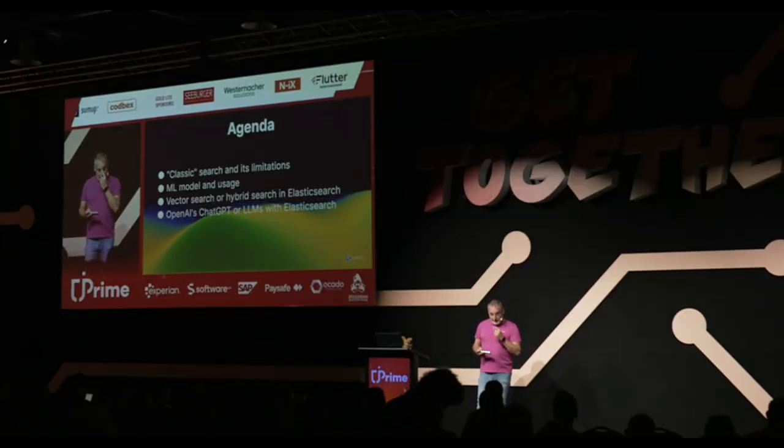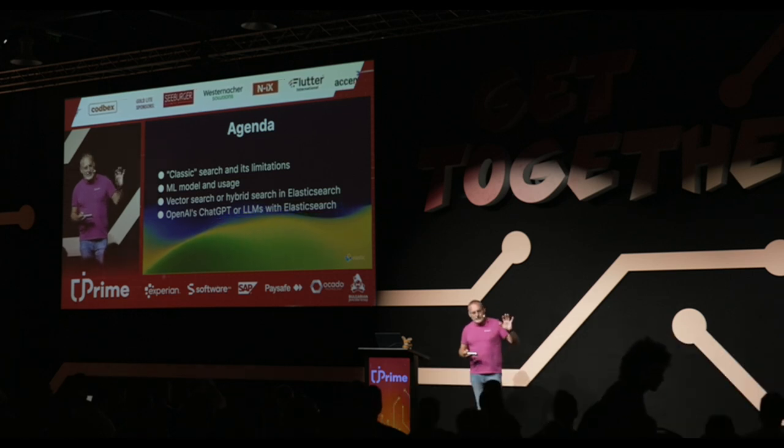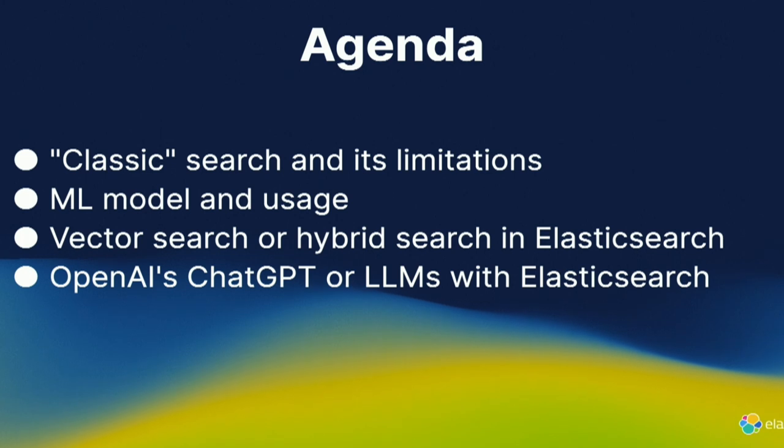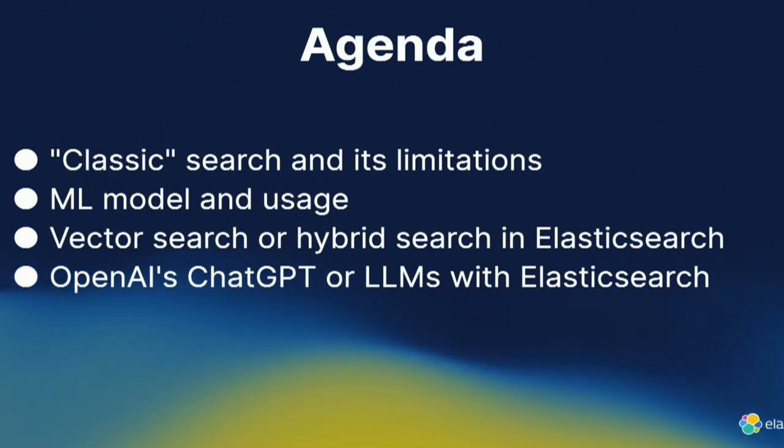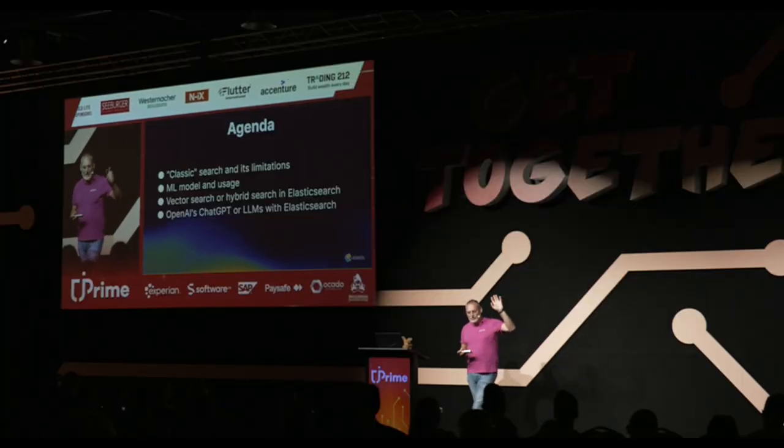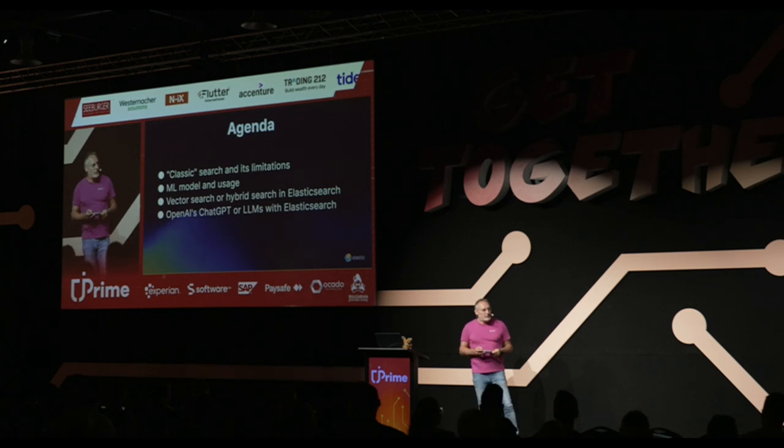The schedule for today: I'm going to cover what classic search is, for those who don't know Elasticsearch. I'll cover what Elasticsearch does with classic search and its limitations, the introduction of new machine learning models and what changed, how you can use Elasticsearch as a vector database, how to combine old and new techniques, and how ChatGPT, OpenAI, and LLMs change the game. Some features I mention will be marked 'commercial' on the slides, but you won't see a lot of that.